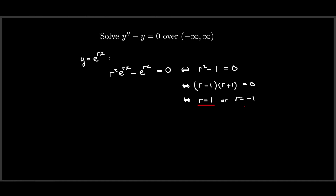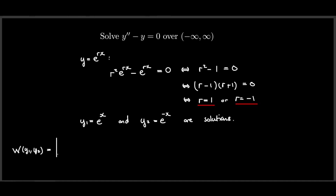These two values r₁ = 1 and r₂ = −1 tell us that y1 = e^x and y2 = e^(−x) are solutions. We can check linear independence using the Wronskian: the determinant with entries e^x, e^(−x), e^x, −e^(−x) gives −1 − 1 = −2. Since this is not zero, y1 and y2 are linearly independent.